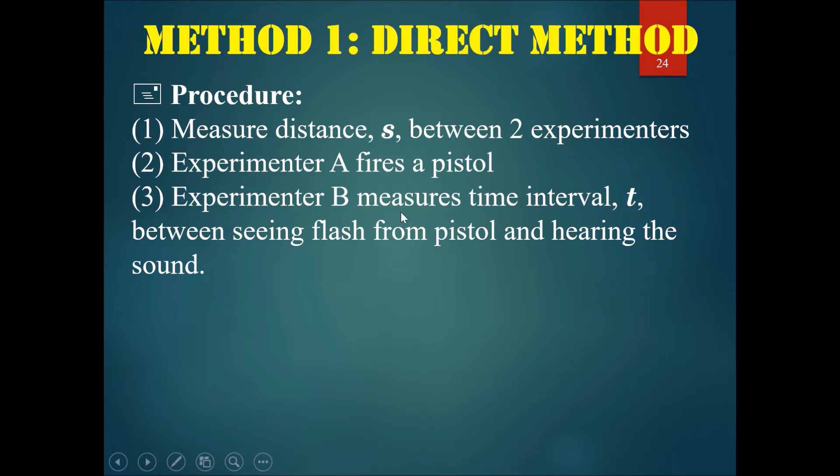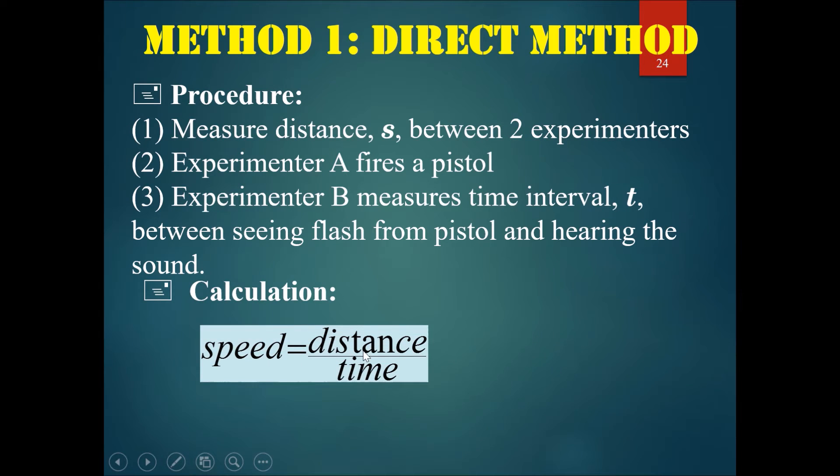So experimenter B would see the flash from the pistol first and that's when he starts his stopwatch. Then he waits until he hears the accompanying sound of the pistol bang and then he stops his stopwatch. This would get him the time interval t between seeing the flash and hearing the bang. Then we can calculate: the speed will be distance over time, therefore the distance s divided by the time interval t will get you the speed of sound in air.